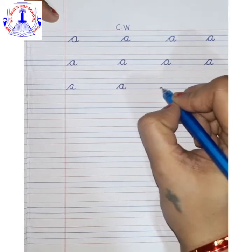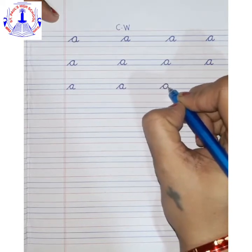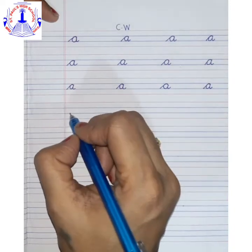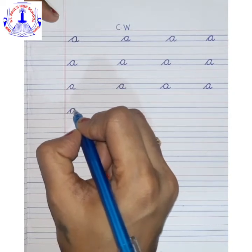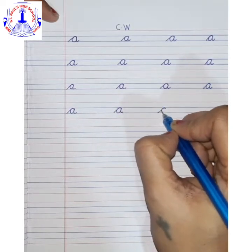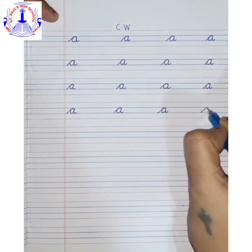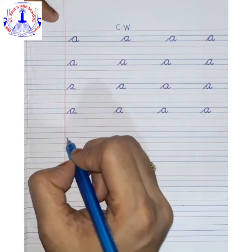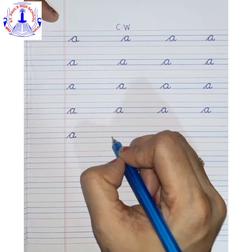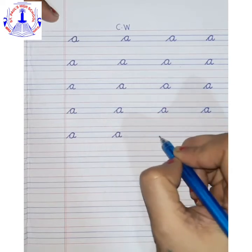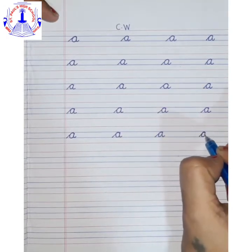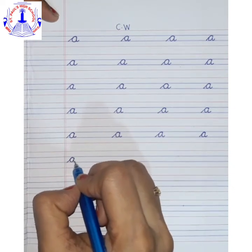A says A — aeroplane. A says A — alligator. Children, when you are writing you have to say the sounds also. Your sound practice will happen and your writing practice also. Make a slanting line, go up, make a curve, come down and make a tail. This is how we write cursive letter A.